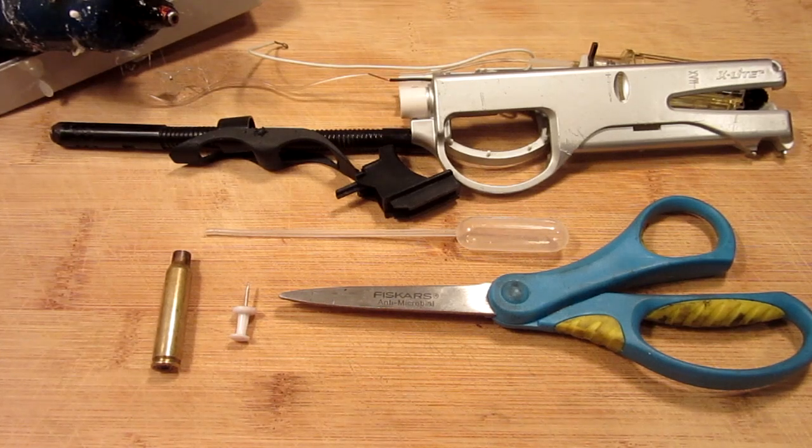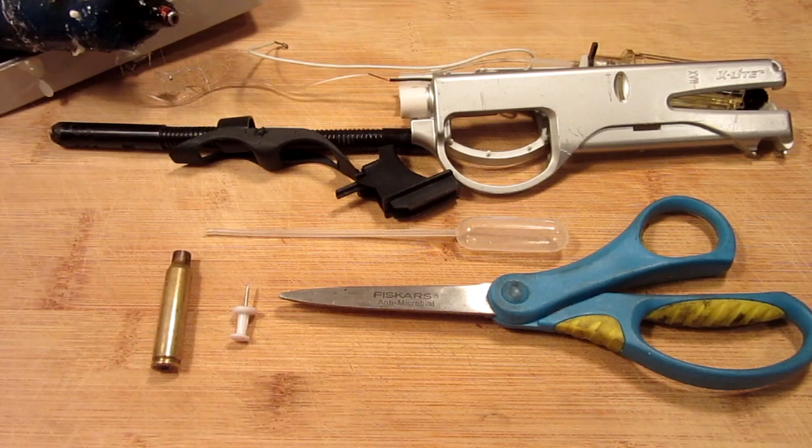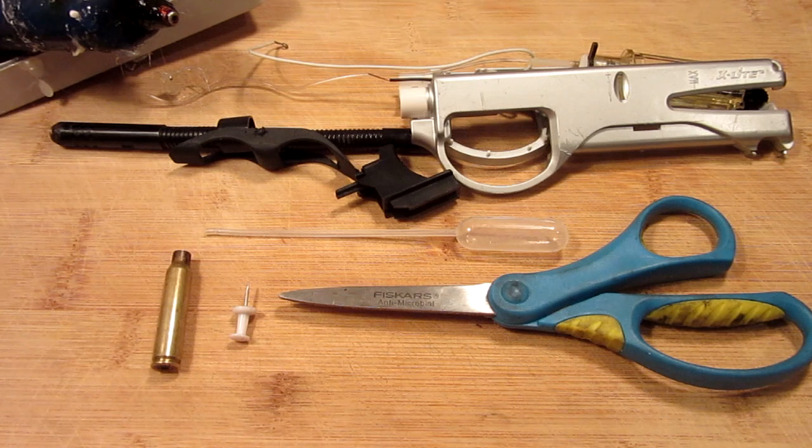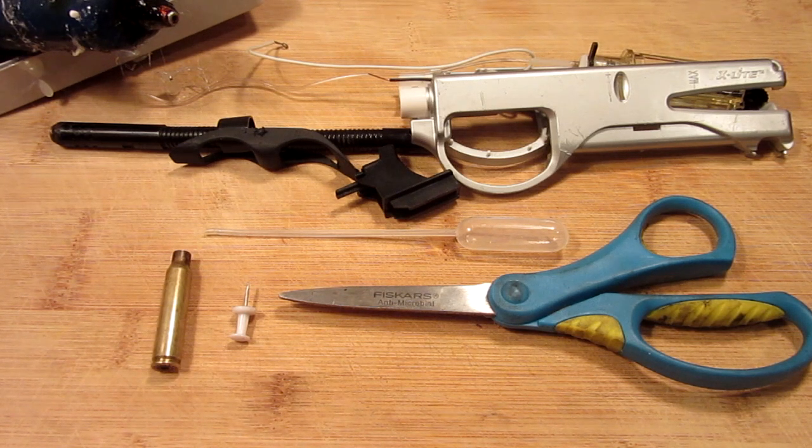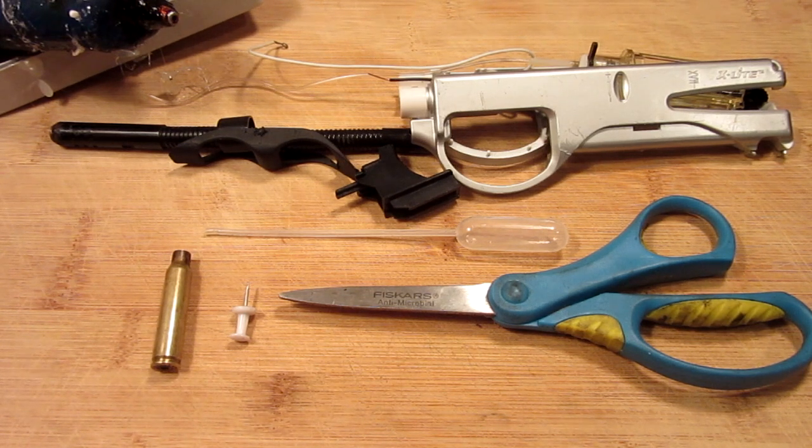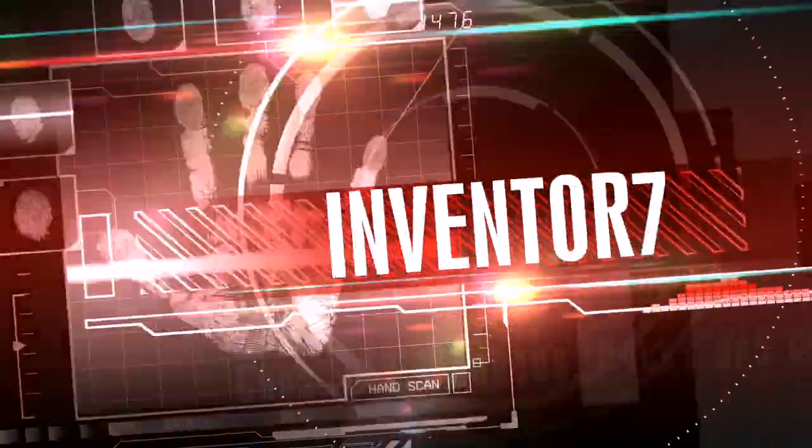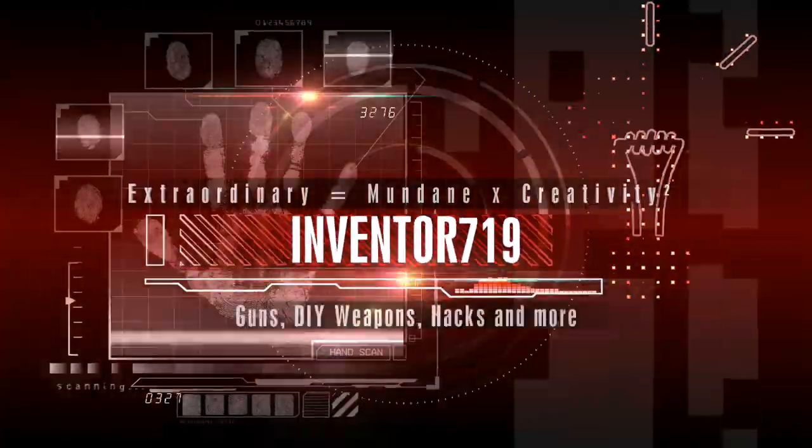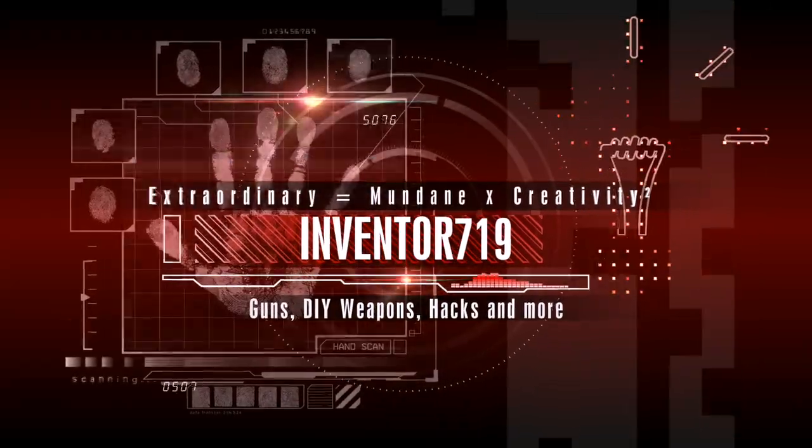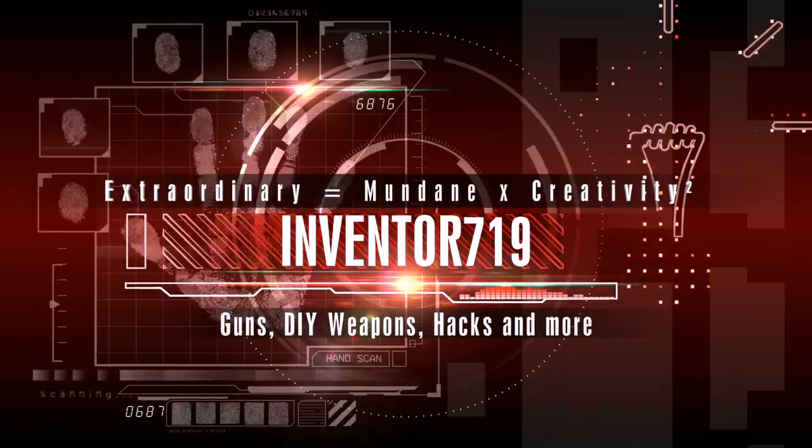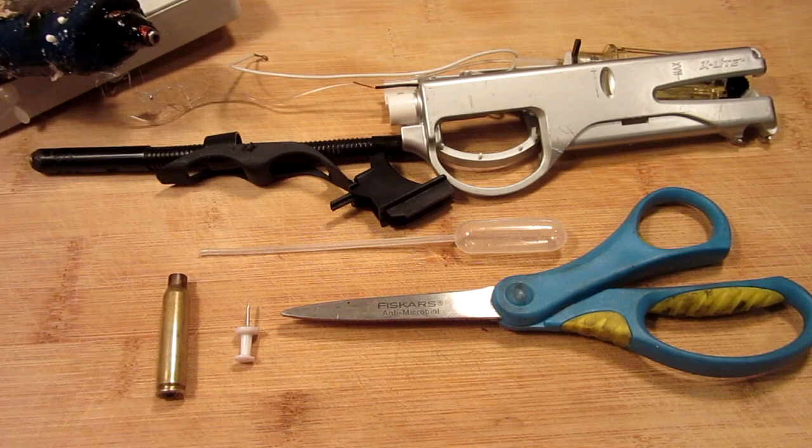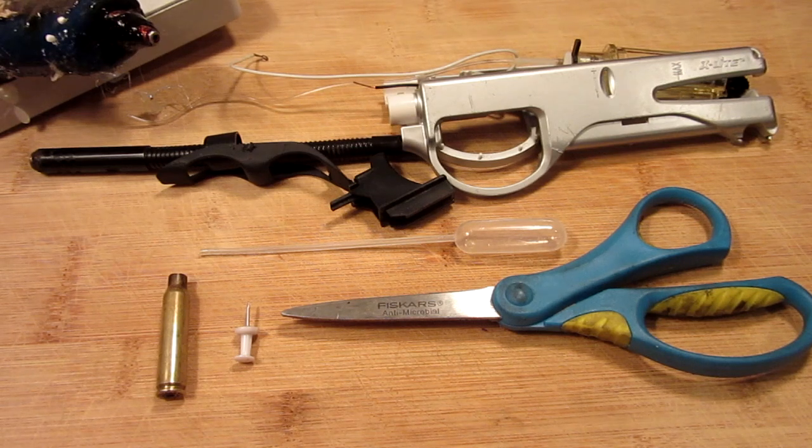Hello everyone, Inventor719 here, and before I start the video, I'd like to apologize for my voice. I'm currently under the weather a little bit, so I may sound stuffy. In today's video, we are going to be making a mini flamethrower with an old shell casing and a lighter.